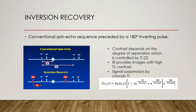An inversion recovery sequence provides an image with high T1 contrast and can be expressed as a signal equation. Also, if Ti is chosen such that the longitudinal magnetization of a tissue is null, then the spins of this tissue cannot have any effect on the obtained MR signal due to the absence of transverse magnetization, which is also due to the absence of longitudinal magnetization. Hence, the inversion recovery technique allows the suppression of the signal of a tissue by selecting the Ti according to the T1 of that tissue.